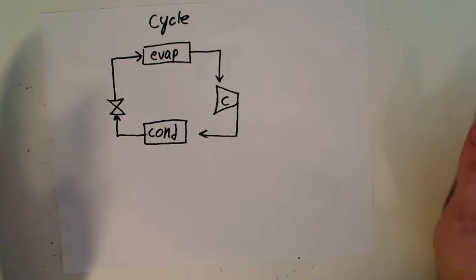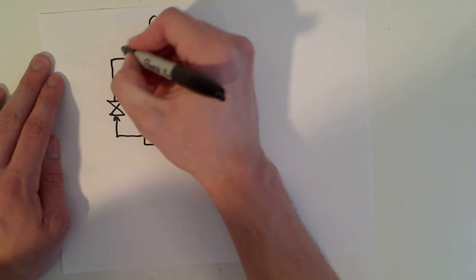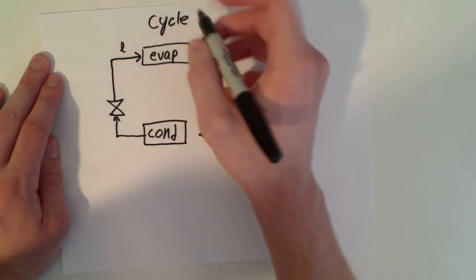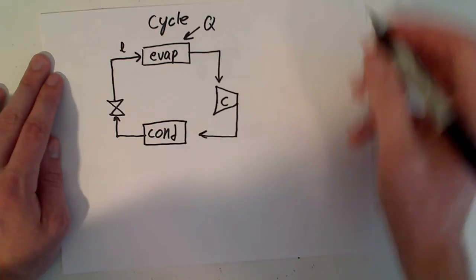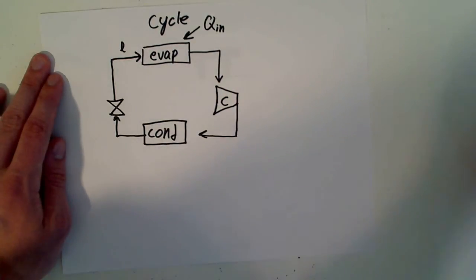The way it basically works is the evaporator starts off with a cold liquid here from the condenser and the expansion valve, and it takes in heat from the surroundings, so that cools it.